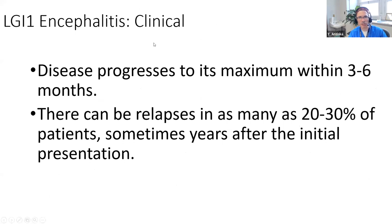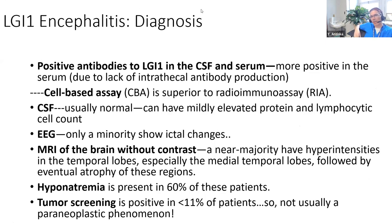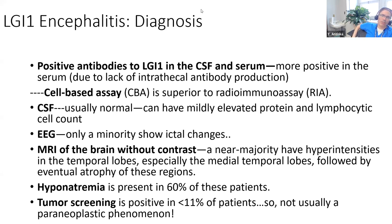The disease usually hits a peak within six months, and even with proper treatment it can relapse in a fifth to almost a third of patients. For diagnosis, you can find LGI1 antibodies in either CSF or serum. These used to be called voltage-gated potassium channel antibodies, but that test can no longer be used because it's non-specific - it must specifically be LGI1 antibodies using a cell-based assay. CSF and EEG can be completely normal. MRI may show temporal lobe hyperintensities, but not necessarily.